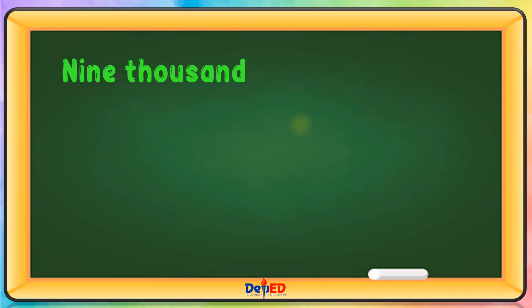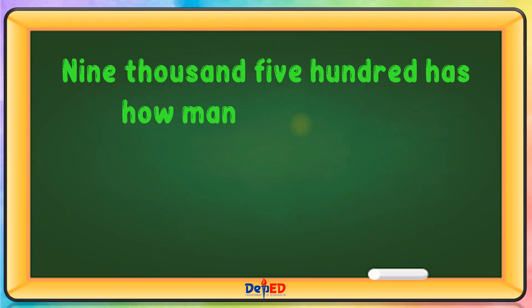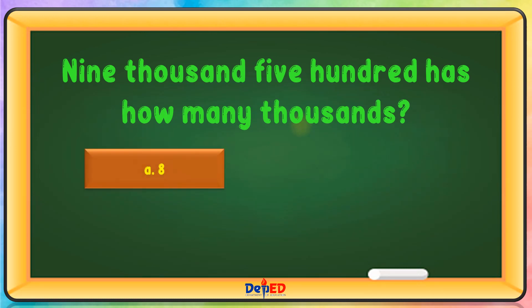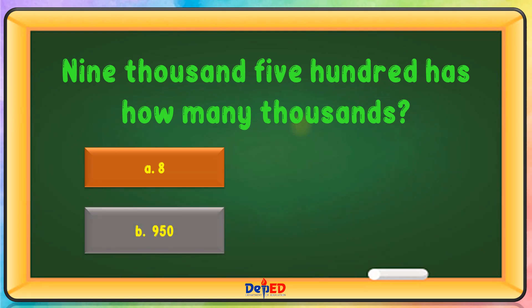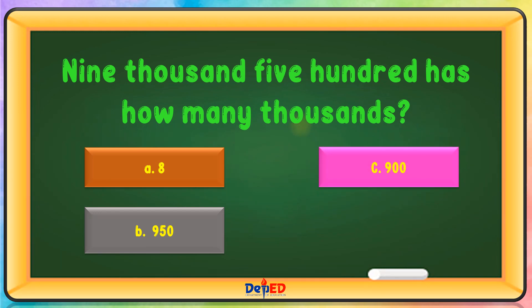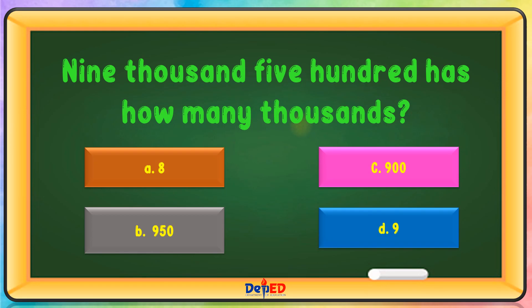9,500 has how many thousands? A. 8, B. 950, C. 900, or D. 9. The correct answer is D.